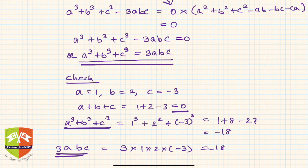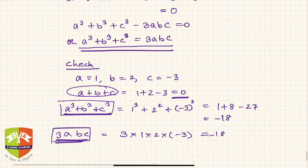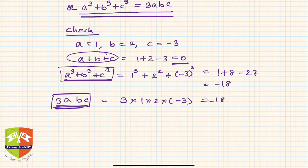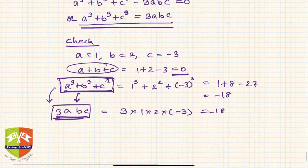So the condition is a + b + c = 0. If this condition is fulfilled, then a³ + b³ + c³ = 3abc. This means a³ + b³ + c³ can be factored as 3abc under this condition. This is what the conditional identity is all about, and it will be useful later when we discuss factorization.